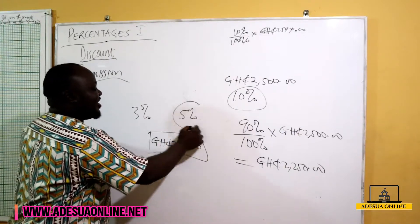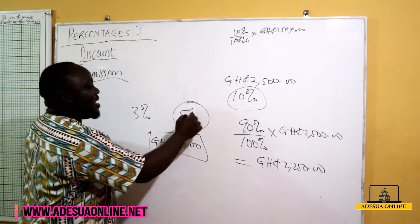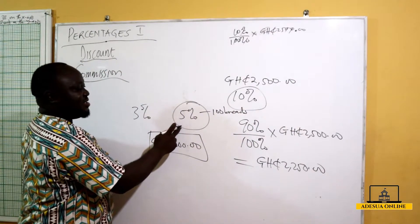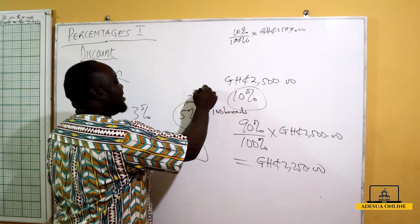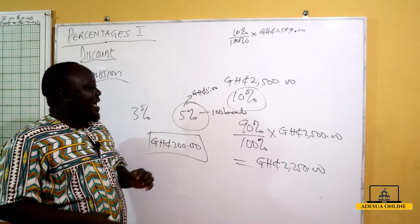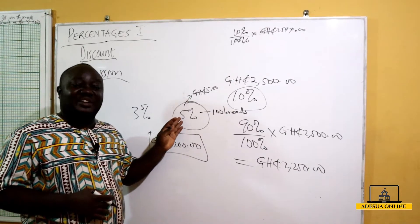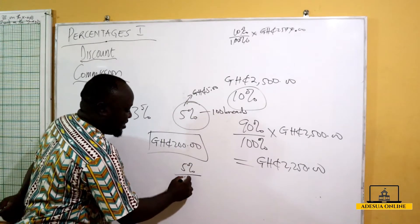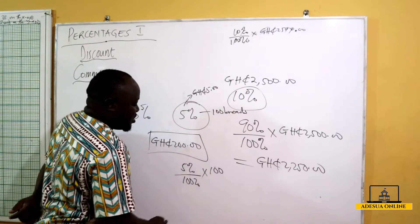So 200 Ghana cedis is your base monthly salary. Now assuming the bread costs 5 Ghana cedis and at the end of the month it was calculated that you sold 100 breads. We are now going to calculate 5% commission of this amount. So 5% of the price means 5 over 100 times the price of each bread.